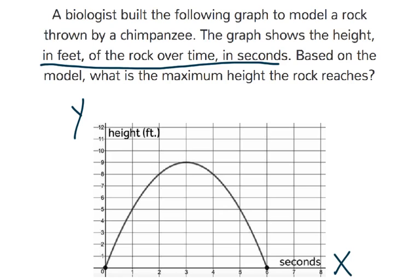Well, you can see the rock is going up and it comes back down. So the maximum height would be the vertex of this quadratic function, which would be this point right here at the top.